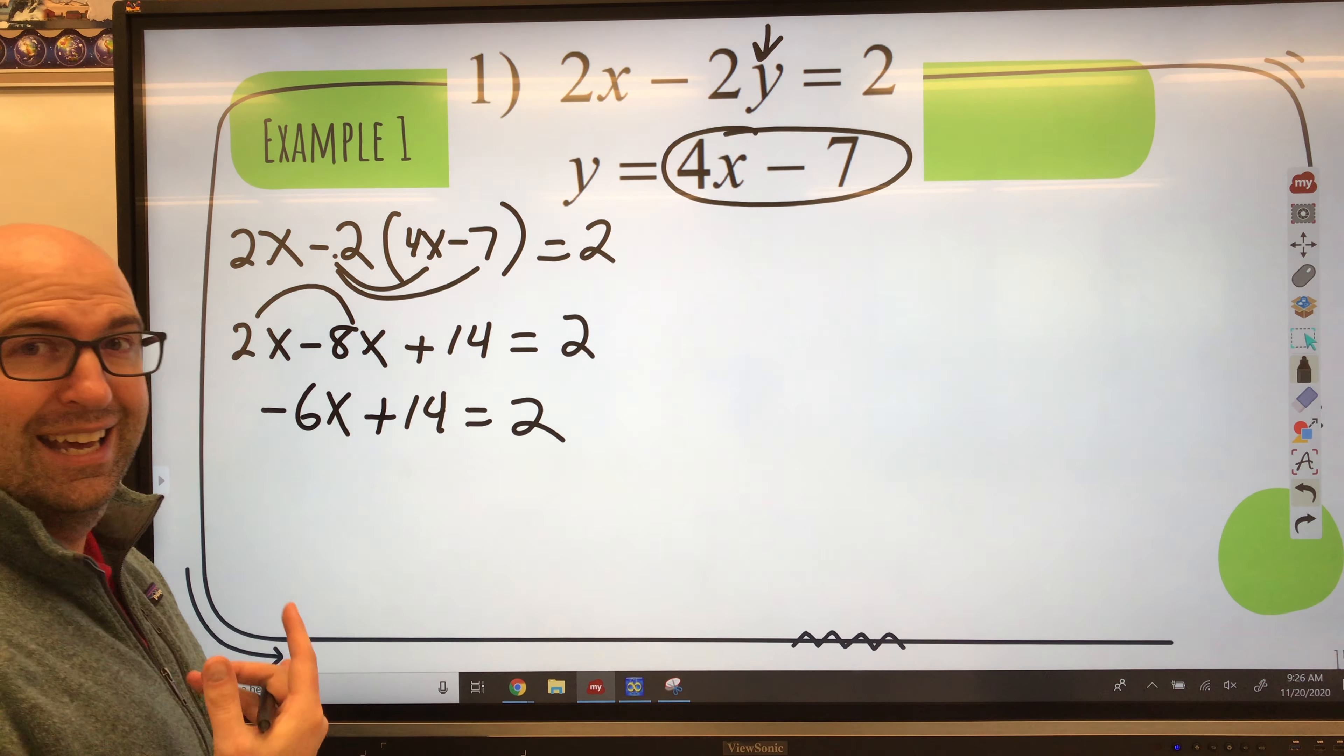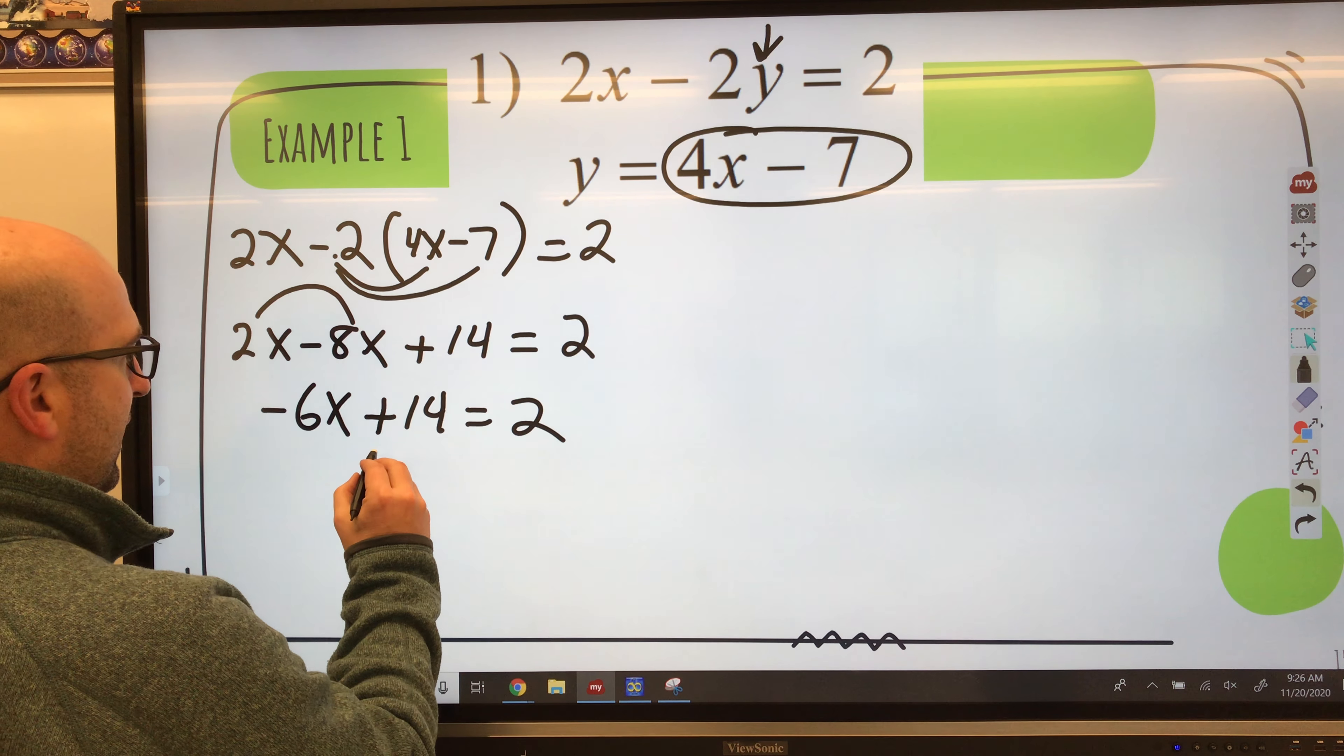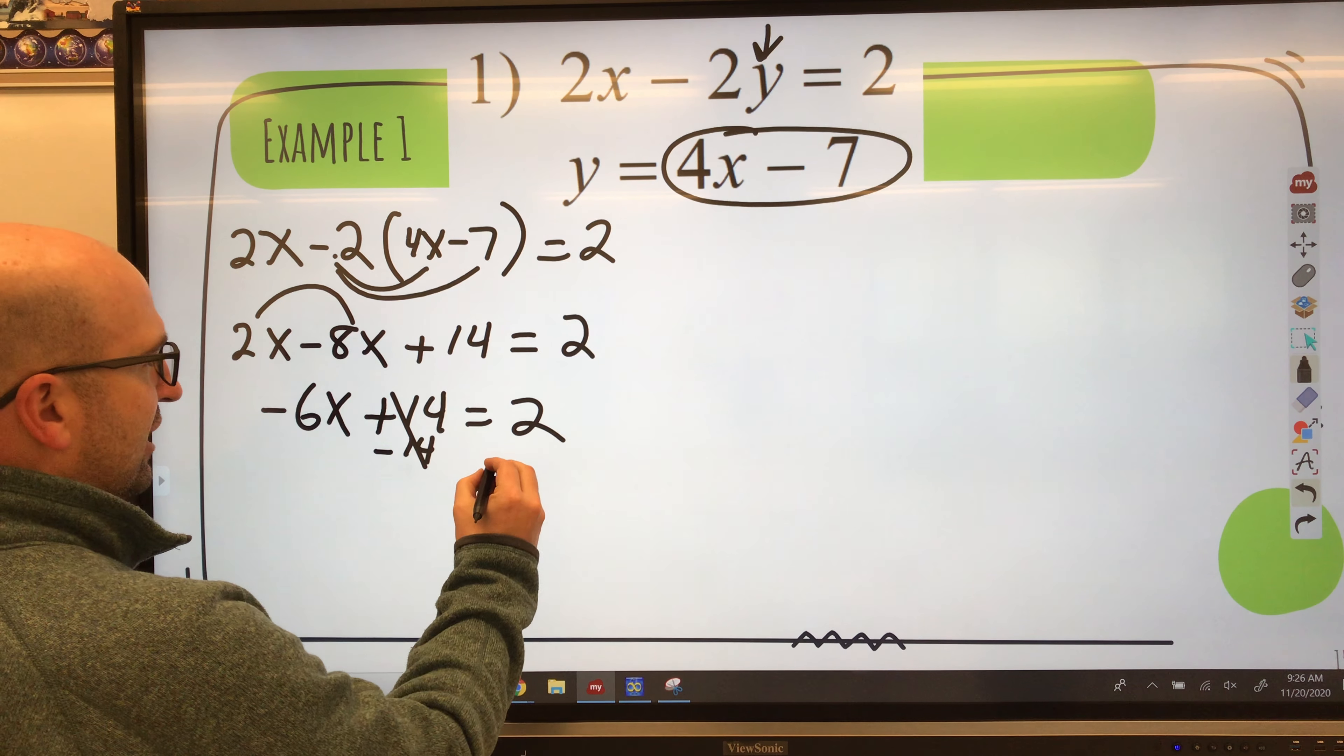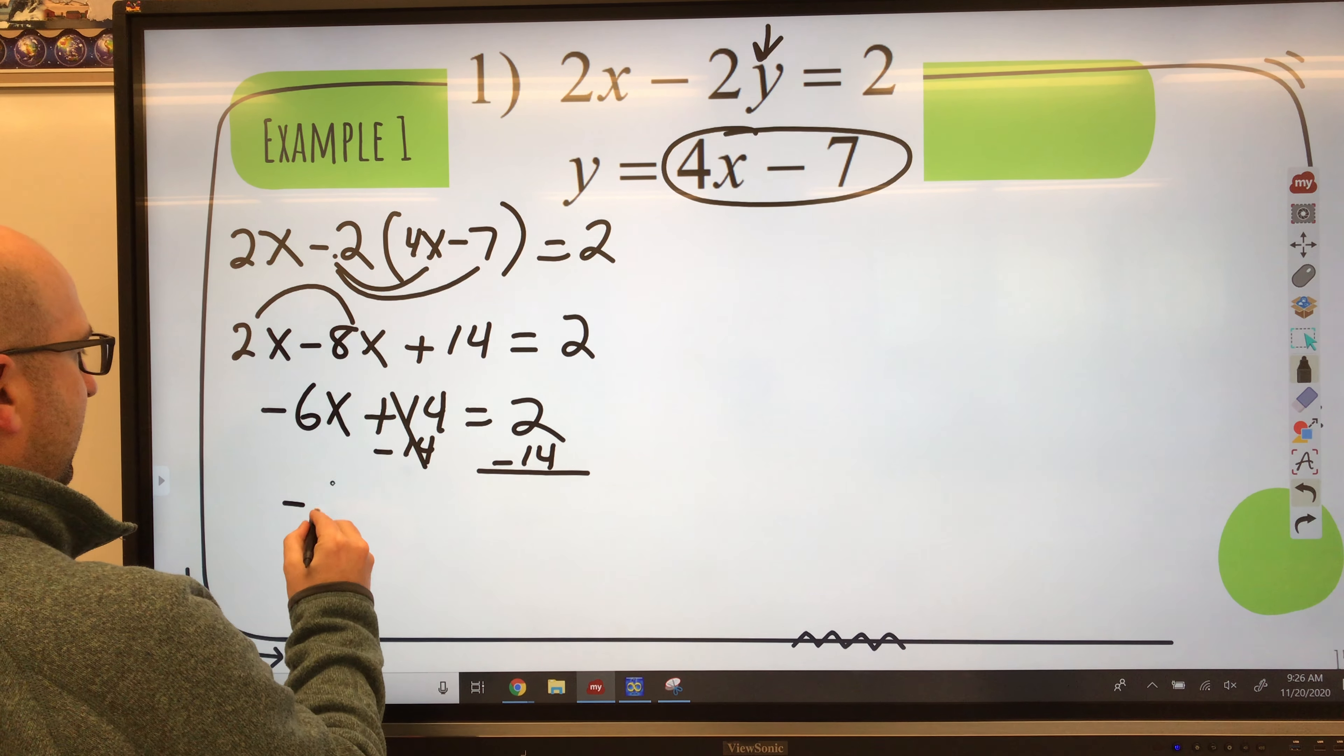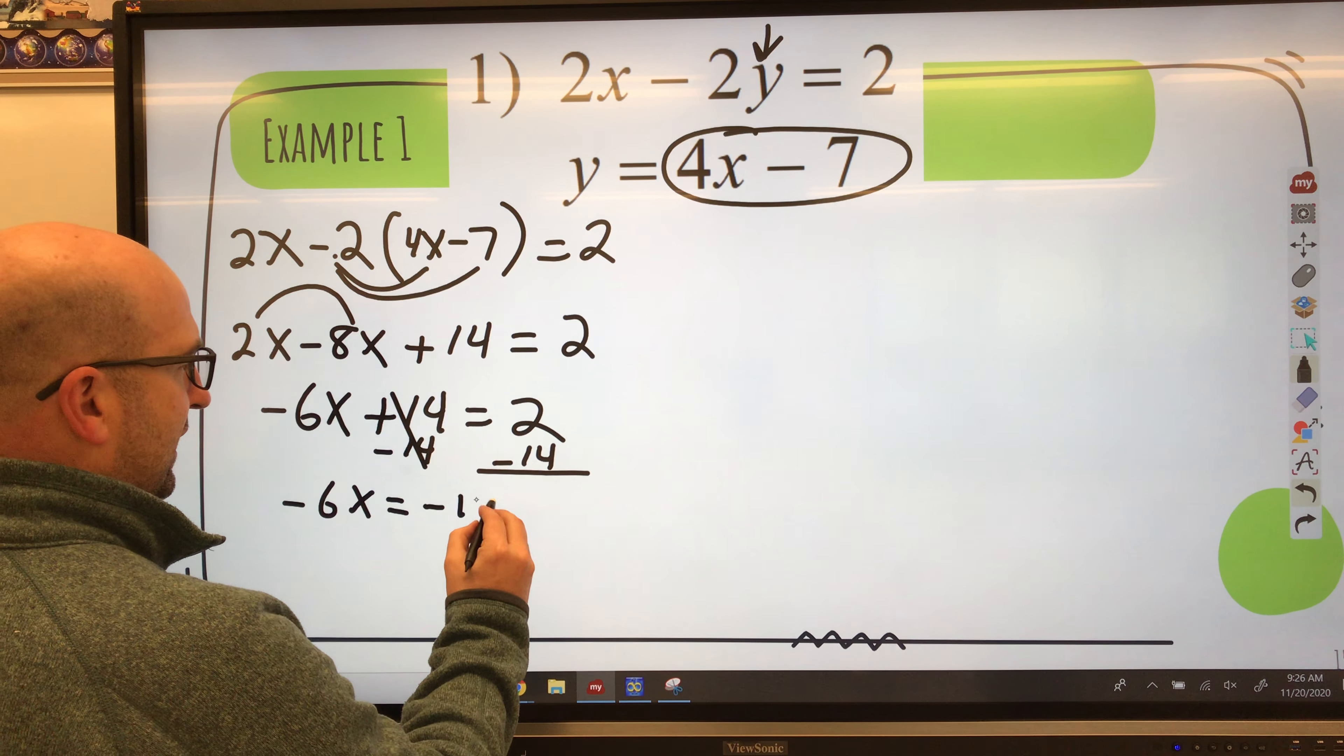Next, I need to get x all by itself. I need to isolate it. So I need to move this number. The inverse of plus 14 is subtract 14. To balance the equation, I've got to do the same thing to the other side of the equation. So bring down my negative 6x. 2 minus 14 is negative 12.